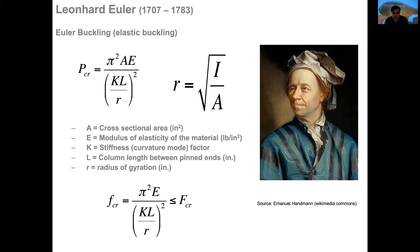Those elements are the cross-sectional area — the area of the column if we do a section of it — a property called the modulus of elasticity of the material, which tells us how the material is able to be elastic or plastic, the thickness of that material according with a factor K, L which is the length of the column, and a radius of gyration R.